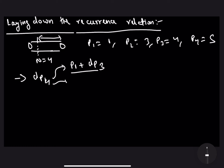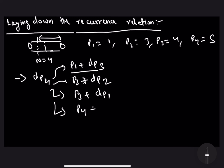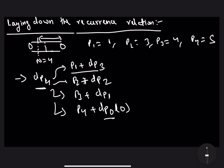Similarly, we can scoop out a rod of length 2, giving P[2] + DP[2]; a rod of length 3, giving P[3] + DP[1]; or a rod of length 4, giving P[4] + DP[0]. Here DP[0] = 0 by default, and this is our base case. Taking the maximum of all four possibilities gives us the value of DP[4].